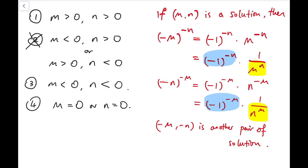Once I complete the first case, I can limit the number of possible solutions in the third case. As for the fourth case, there is clearly no solution because when m is zero, zero to the power n equals n to the power zero. But the left-hand side is exactly zero, unless n is zero — but zero to the power zero is undefined. So clearly there is no solution.